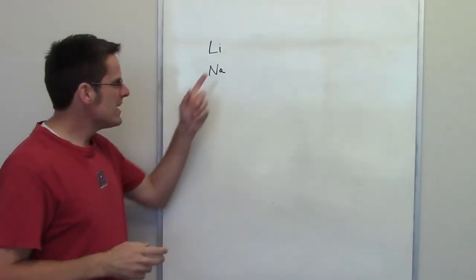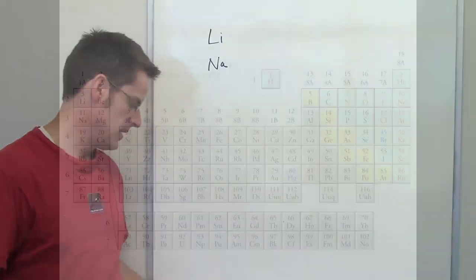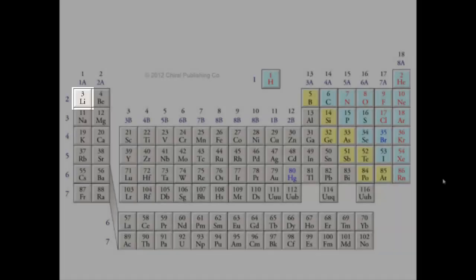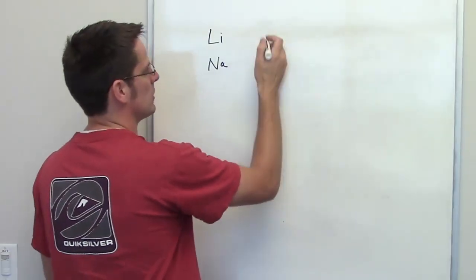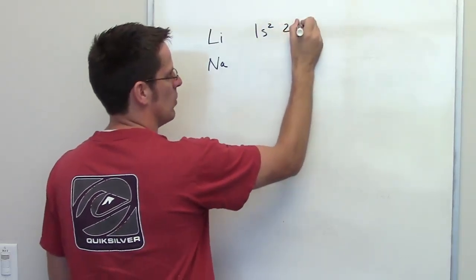In this question we're asked, why does lithium have a higher first ionization energy than sodium? If you look at the periodic table, lithium is in box number three. That is, it has an atomic number of three, which means that its electron configuration is 1s2, 2s1.